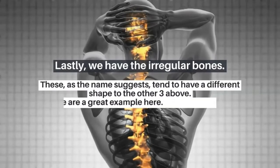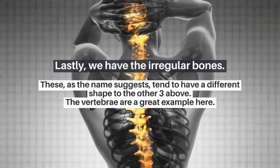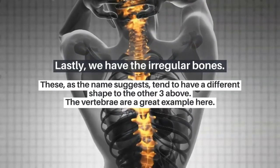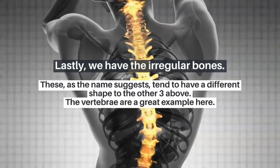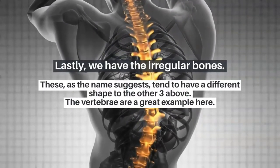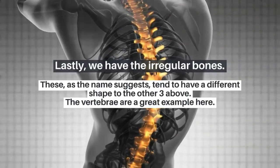Lastly, we have irregular bones. As the name suggests, these tend to have a different shape compared to the other three types. The vertebrae are a great example of irregular bones.